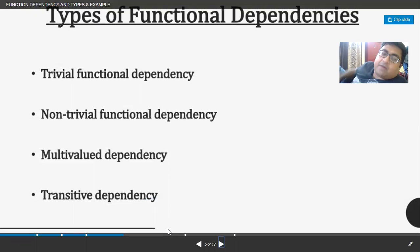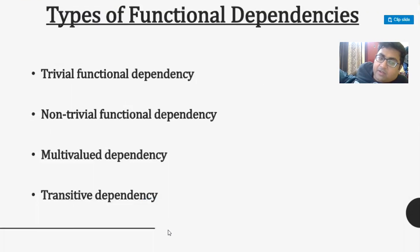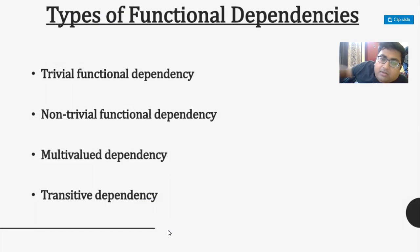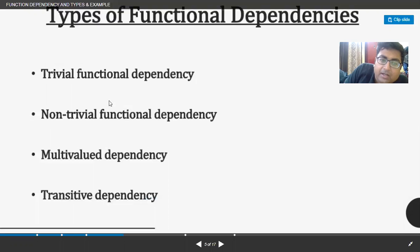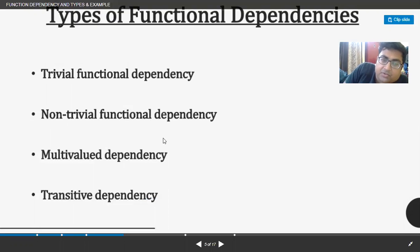There are four types of functional dependency we generally see: trivial functional dependency, non-trivial functional dependency, multi-valued dependency, and transitive dependency. These are very important, and you will see the application of all four types in normalization as well.